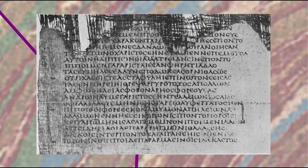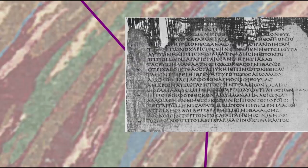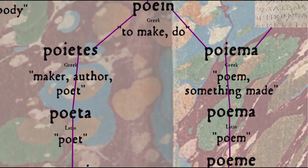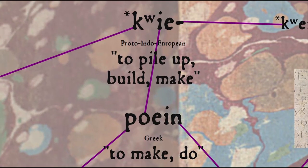So let's start with the etymology of the word poem itself. Poem comes into English, through French and Latin, from Greek poiema, from the verb poien, meaning to make or do, which can be traced back to the Proto-Indo-European root kwe, meaning to pile up, build, or make.